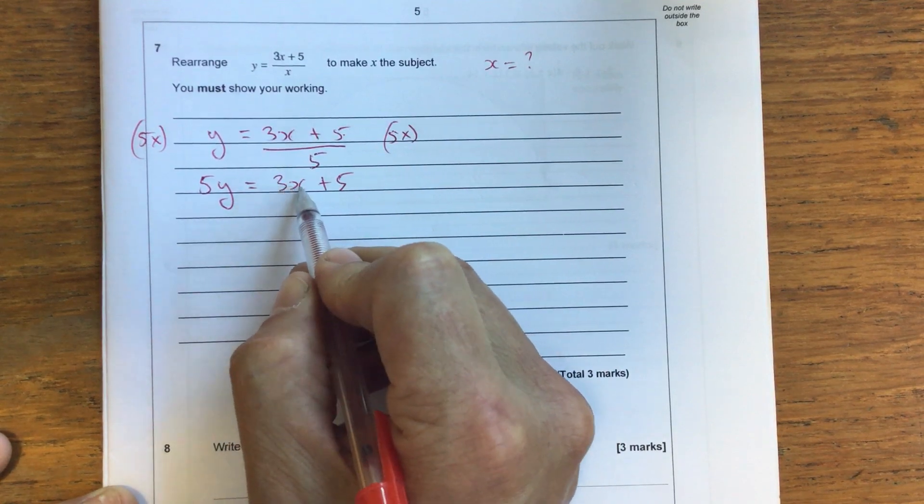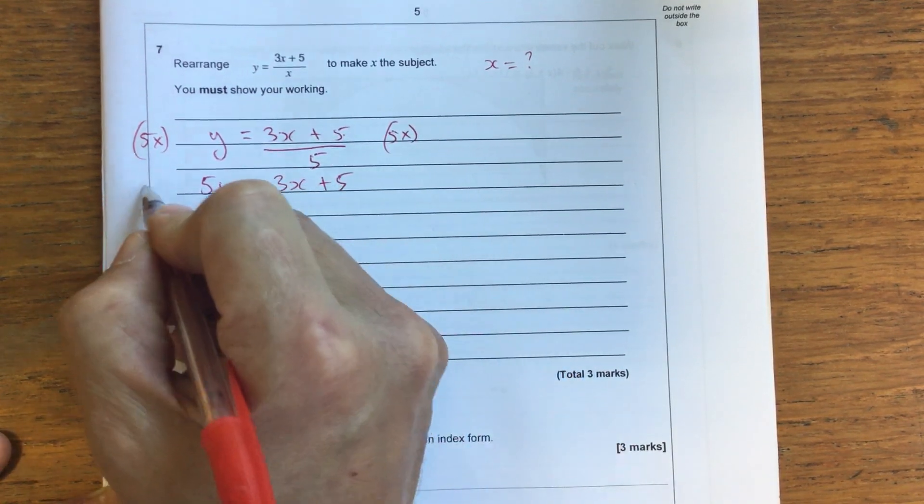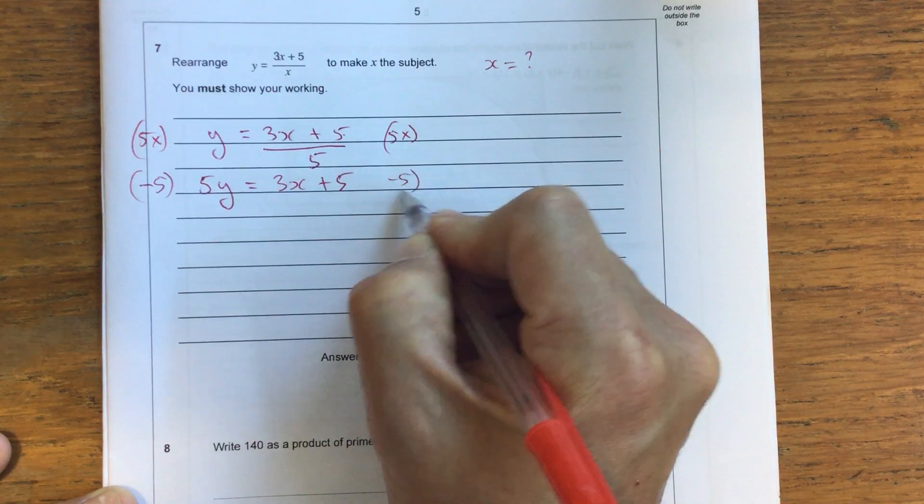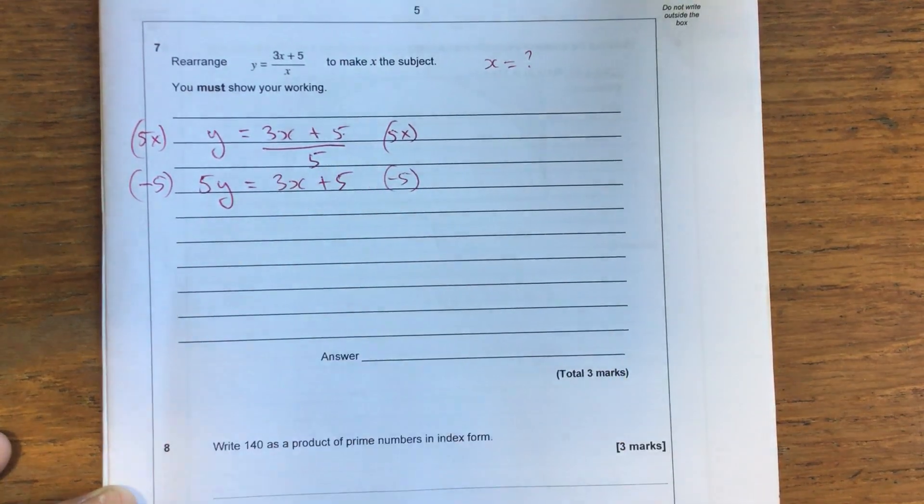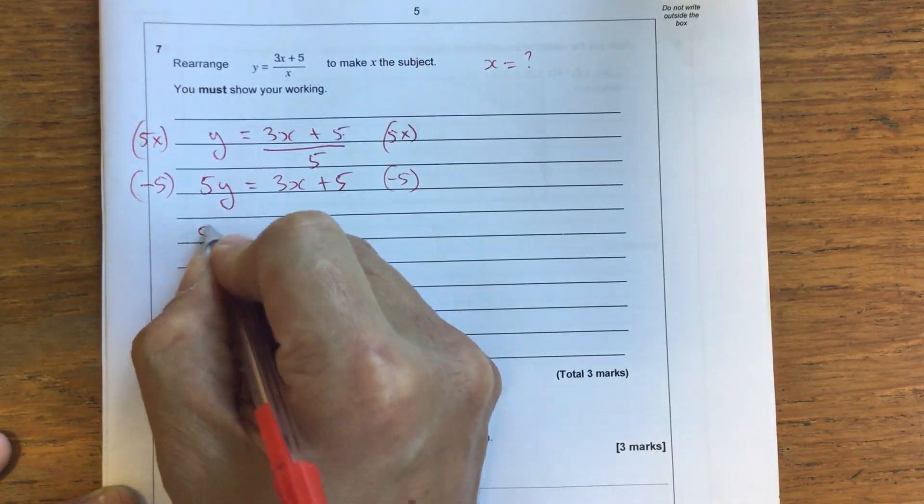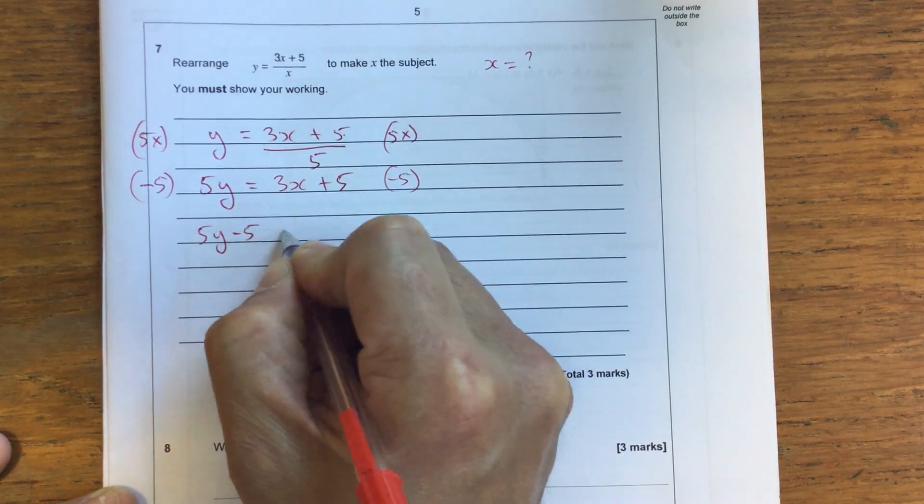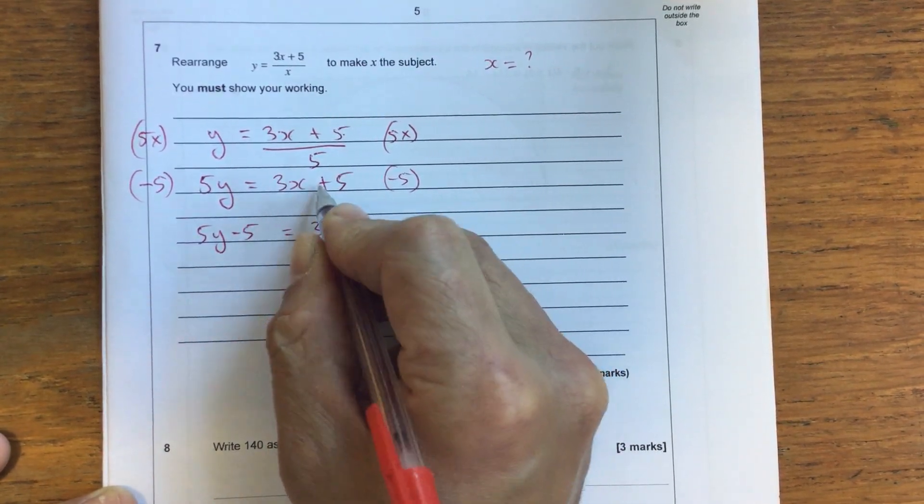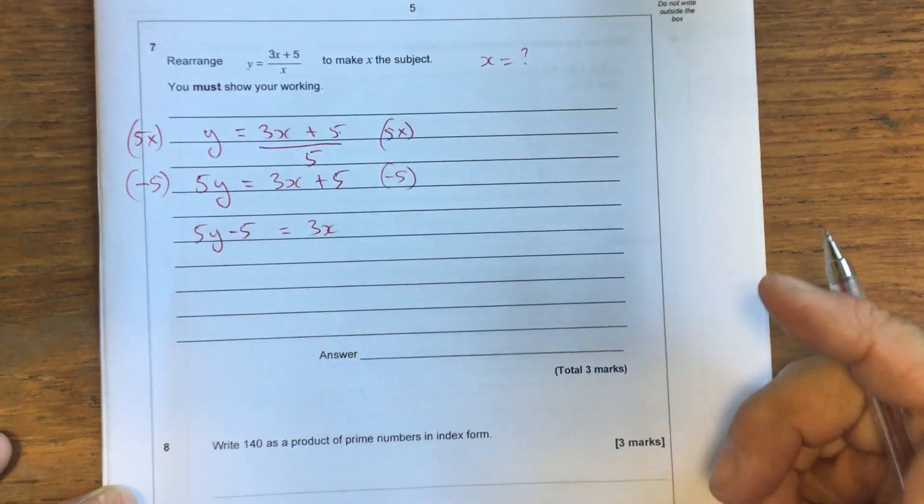I've got 3 times x plus 5. The next thing I'm going to do is I'm going to subtract 5 from both sides, and that should cancel out this positive 5. So on the left, I'll have 5y minus 5. And on the right, I'll have 3x plus 5 minus 5, which just leaves me with 3x.